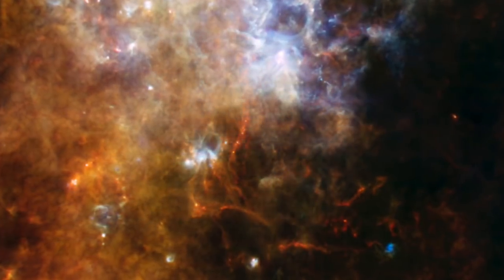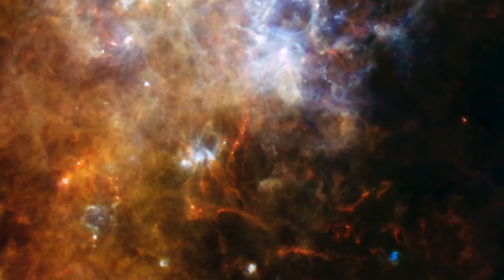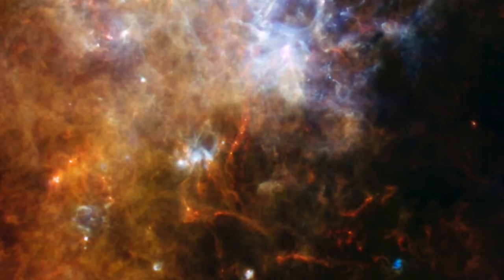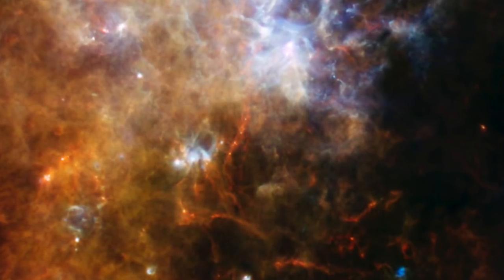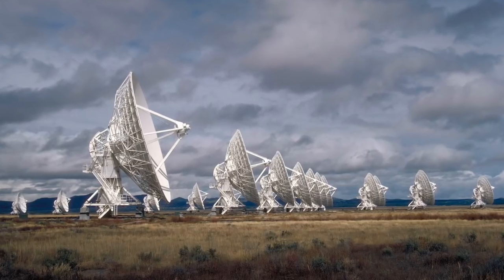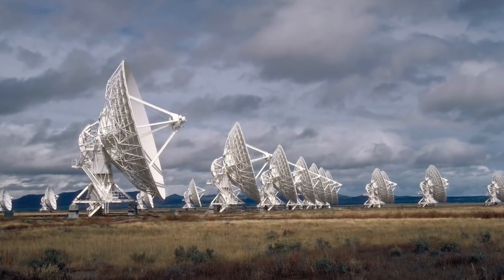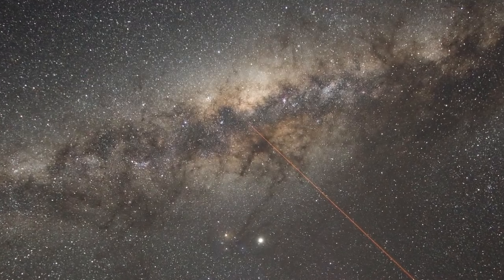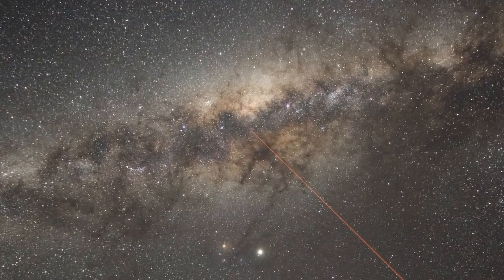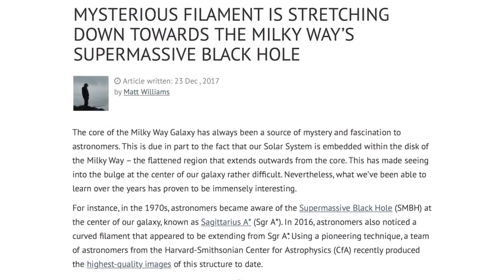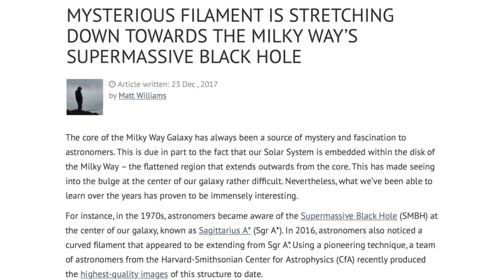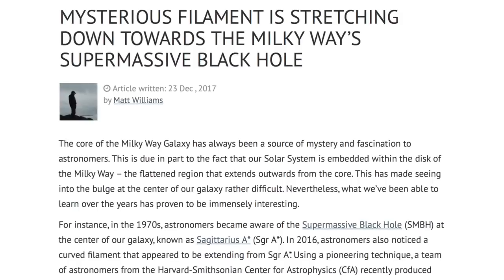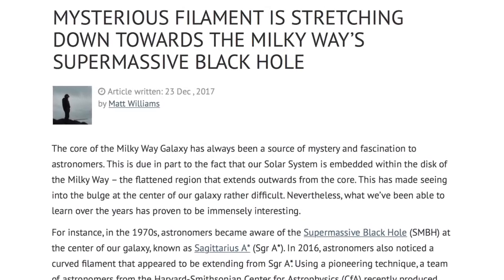It's therefore no surprise that the discovery of huge filaments in space continues to send mainstream scientists searching for answers. Recently, astrophysicists using the Very Large Array Telescope have made what for them is a completely unexpected discovery near the center of the Milky Way galaxy. What they have found is a nearly two-and-a-half light-year-long filament that is probing the hypothetical black hole at Sagittarius A.